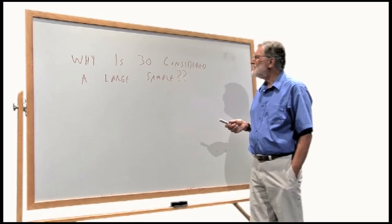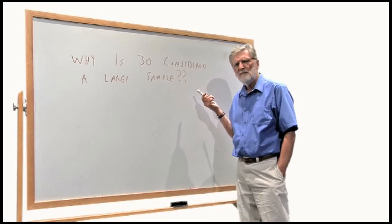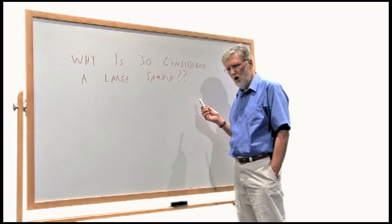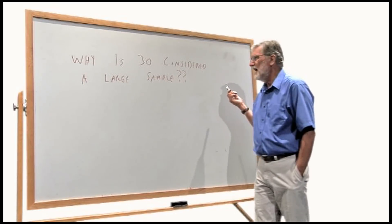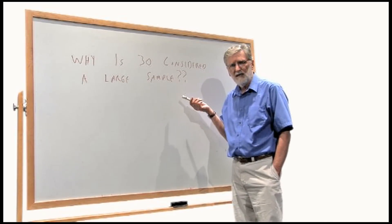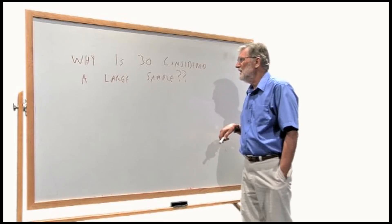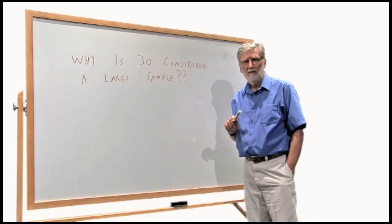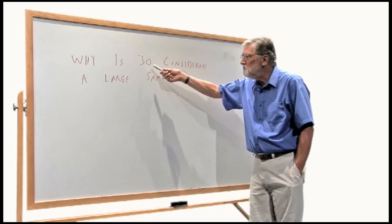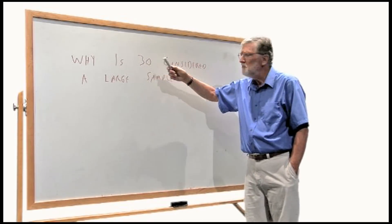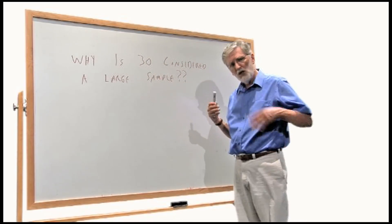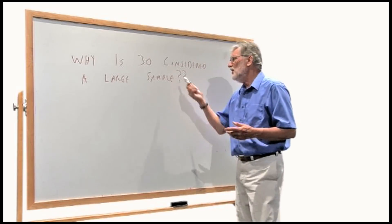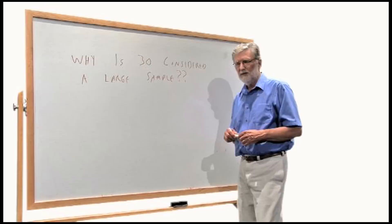In statistics, there's a distinction often made between taking a small sample and taking a large sample. So the question arises: how big a sample is it in order to call it a large sample? And the answer that's often given is 30. If you have at least 30 scores in your sample, then you can use what are called large sample techniques, but if you have fewer than 30, you ought to use small sample techniques.